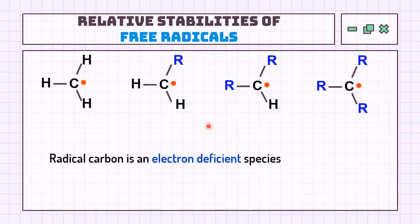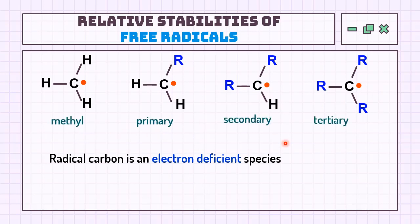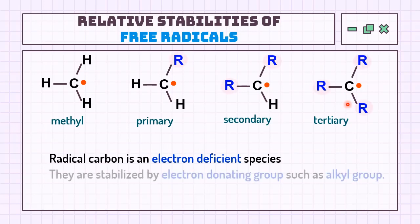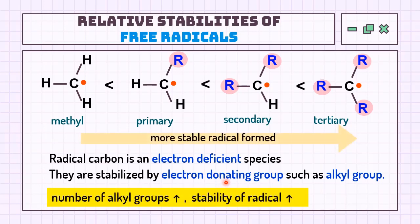A free radical of carbon is an electron-deficient species with only seven electrons in its valence shell. It is a short-lived, highly reactive species due to its strong tendency to acquire one more electron to complete its octet. It can be classified into four classes: methyl, primary, secondary, and tertiary. Since it is electron-deficient, it becomes more stable when surrounded by electron-donating groups — specifically alkyl groups. Therefore, the stability order of free radicals is: tertiary > secondary > primary > methyl.